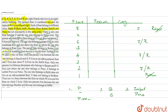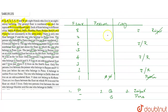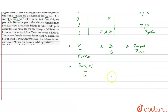Only one person lives between the one who belongs to Ranchi and S, so there will be exactly one person between Ranchi and S. P lives on an odd number floor and T lives just above P. So we write P on odd number floors as possibilities, and T will be just above P.